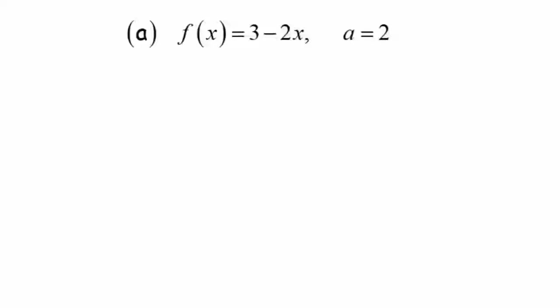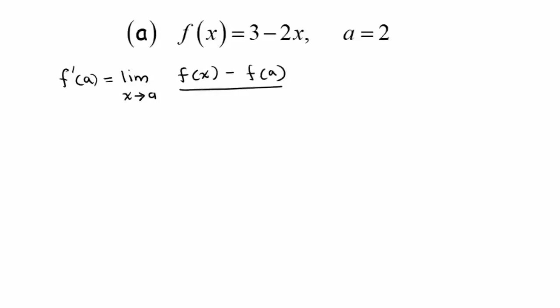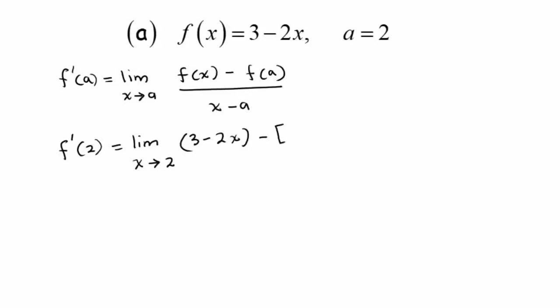To find the differentiation of this function at point a equals to 2, I am going to substitute in this formula. So f'(a) equals the limit as x approaches a of f(x) minus f(a) divided by x minus a. So f'(2) equals the limit as x approaches 2 of 3 minus 2x, minus f(2) which is 3 minus 2 times 2, divided by x minus 2.